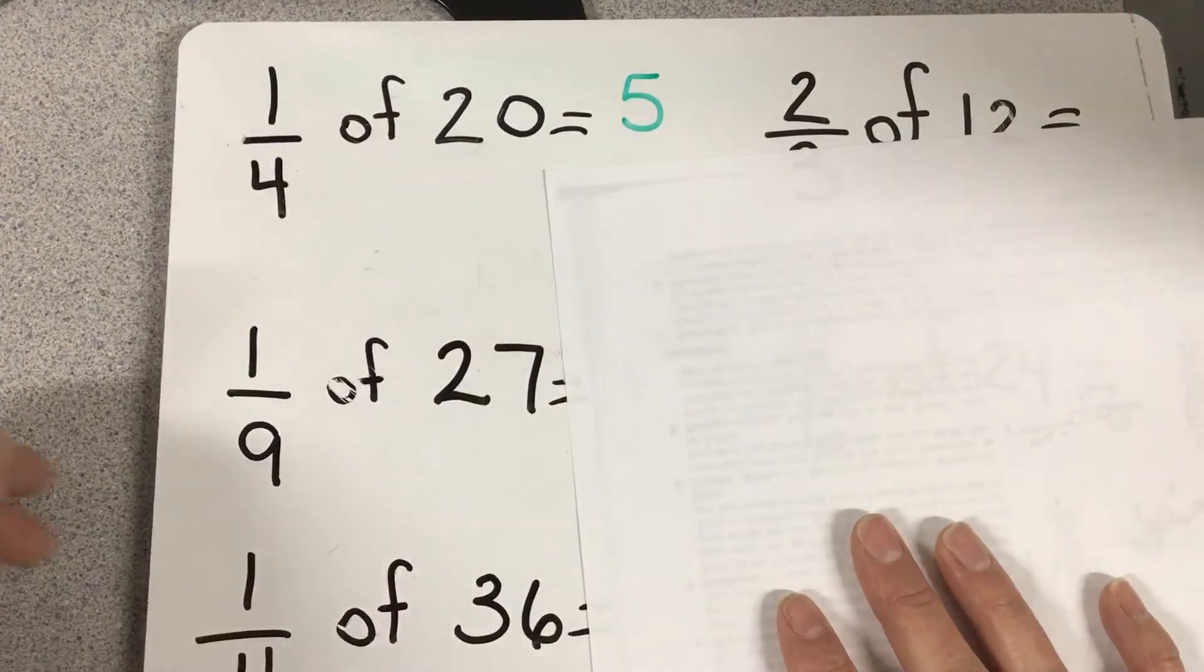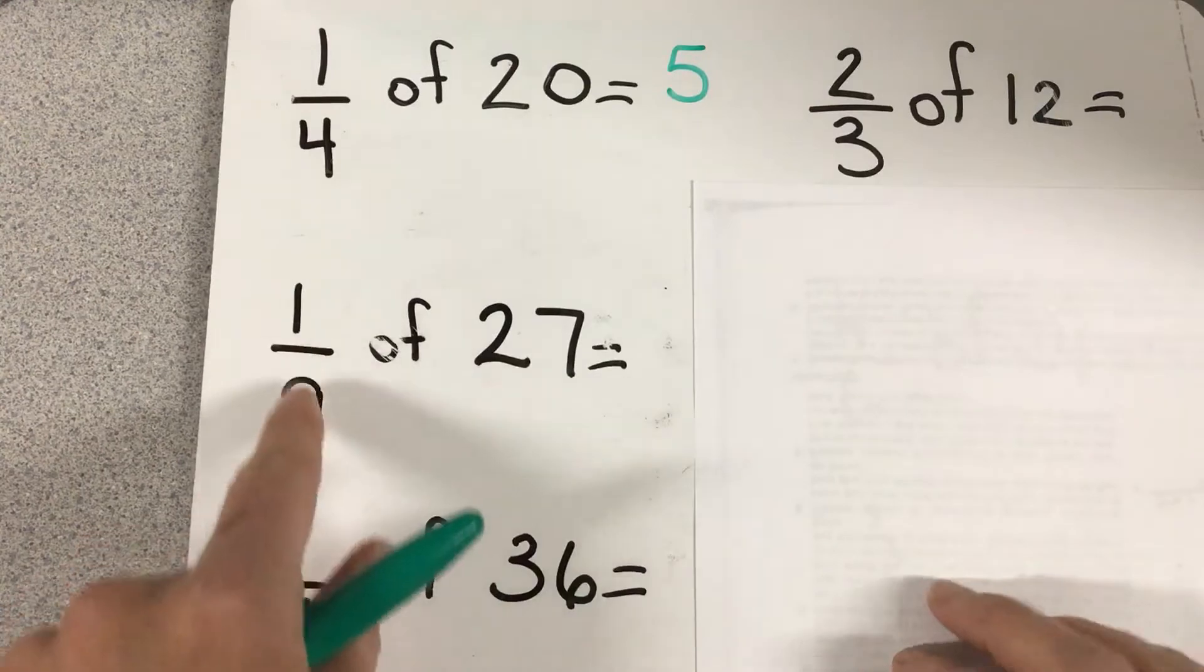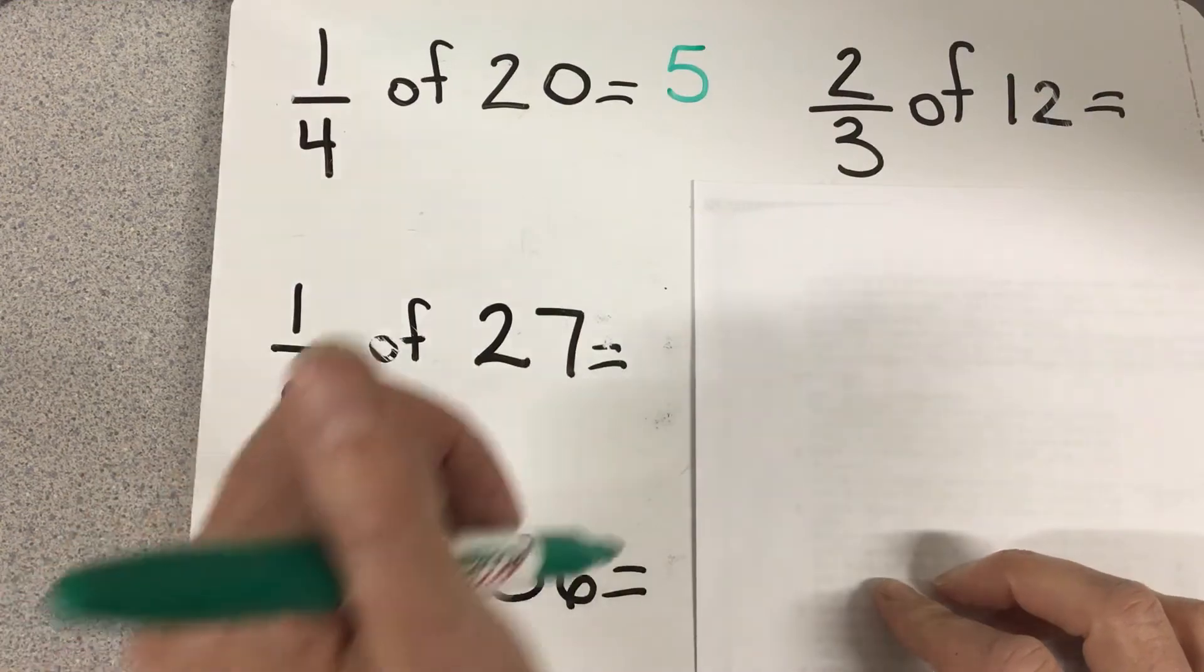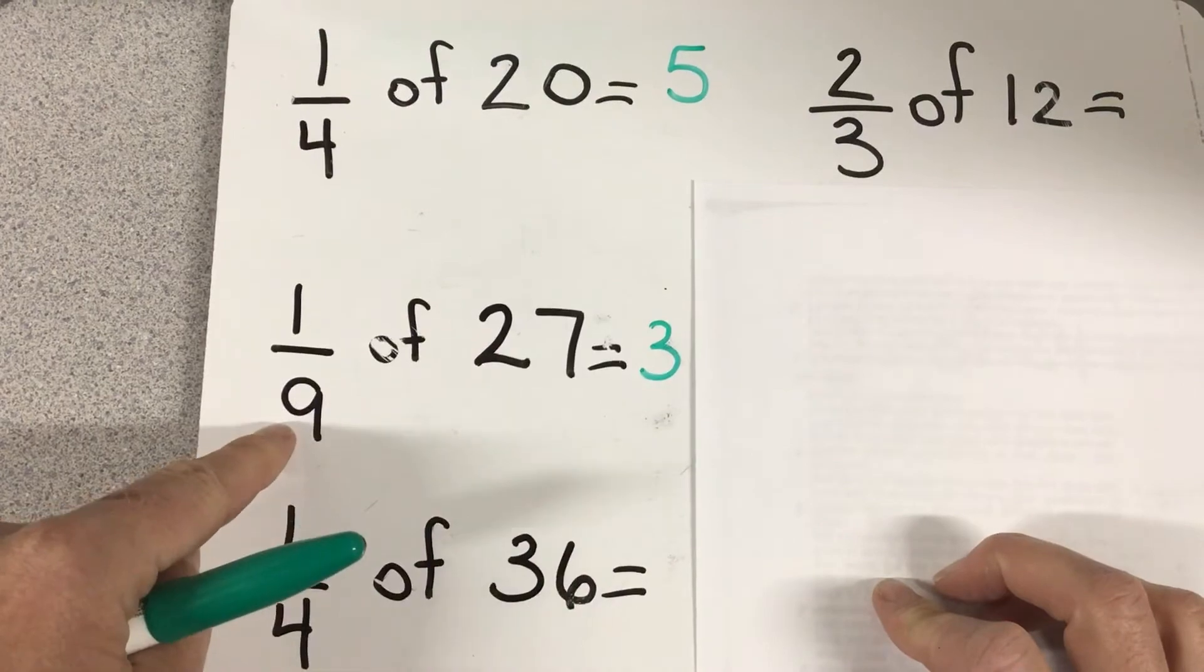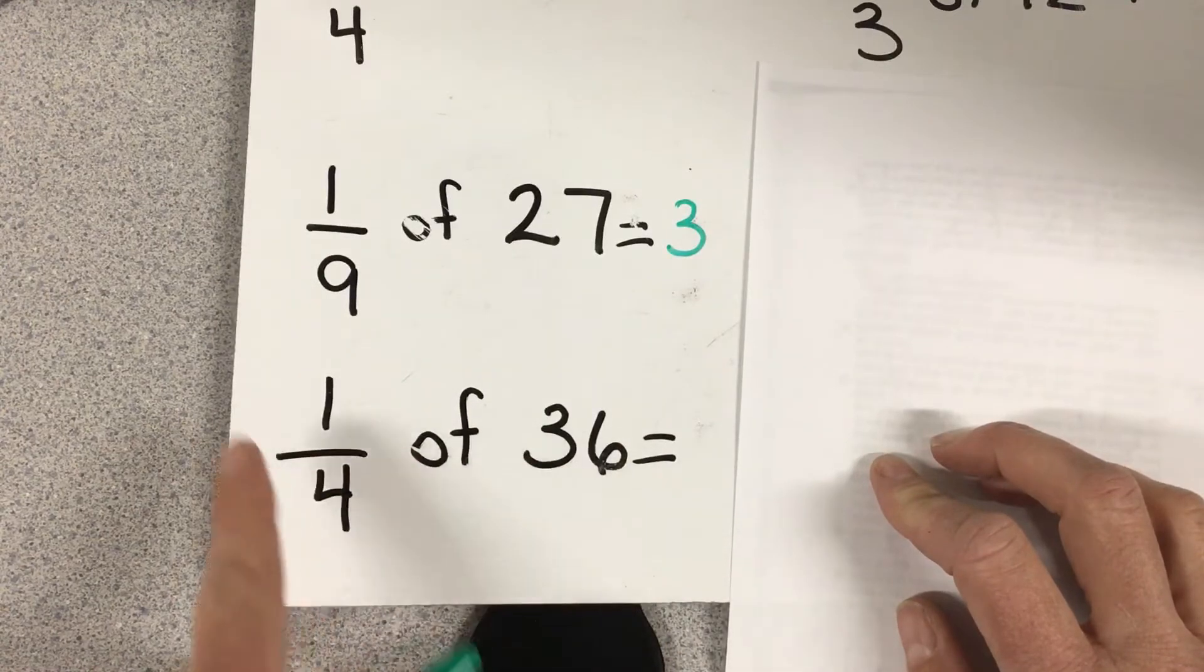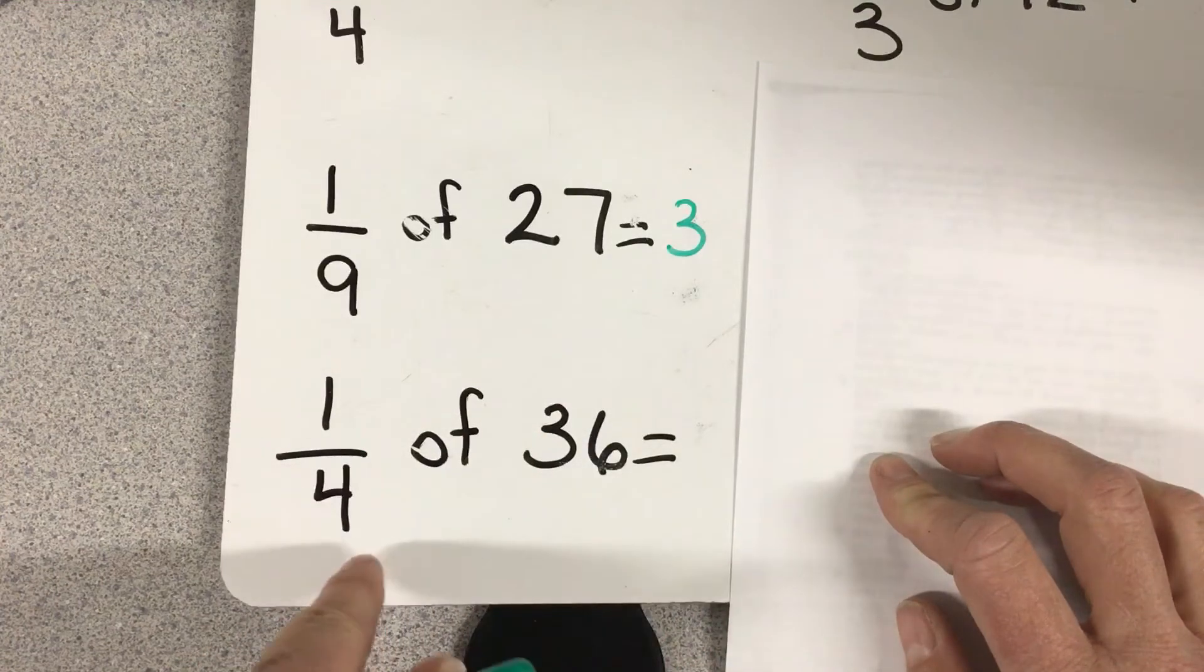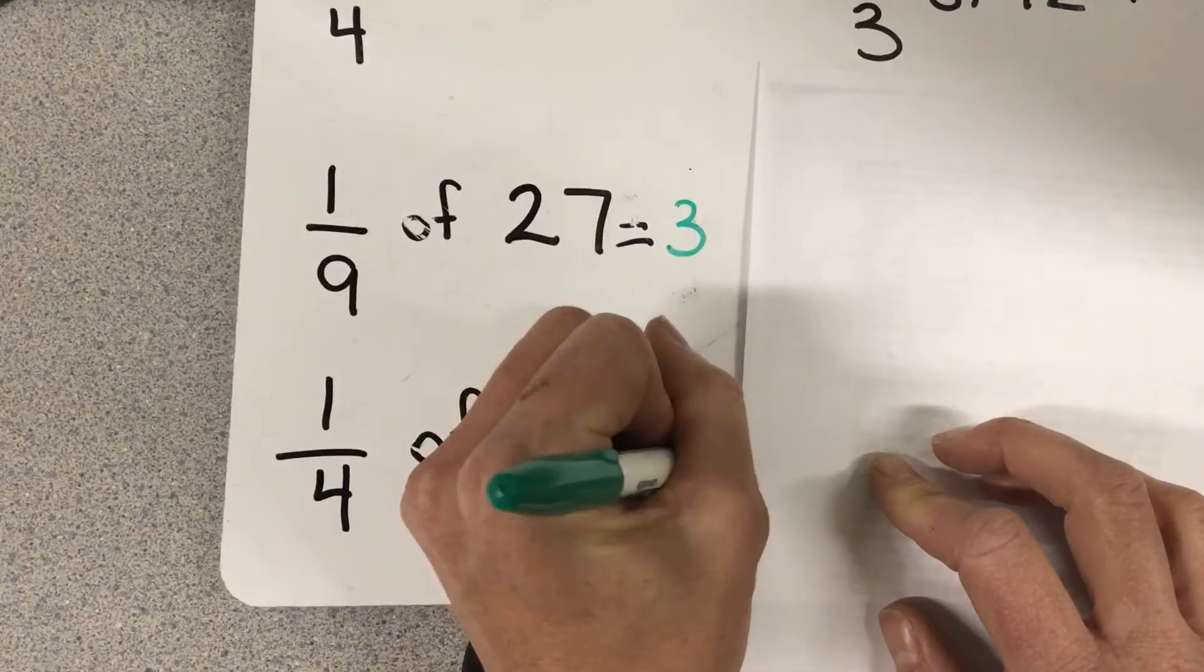You need to remember that step because it gets trickier. When you get to the next one, one ninth of 27, I take my number here, 27, divide it by 9, and I get 3. So if I was to split 27 into nine little groups, each group would have 3. The next one is one quarter of 36. If I'm splitting 36 into four little groups, I would go 36 divided by 4 equals 9. Sorry, I had a complete brain fart - you might have got that faster than me.